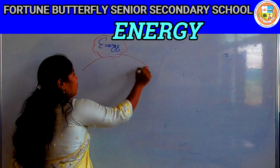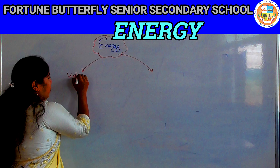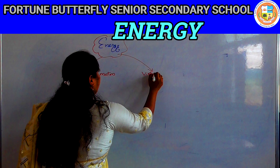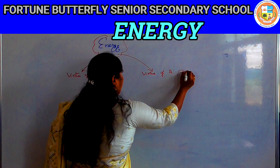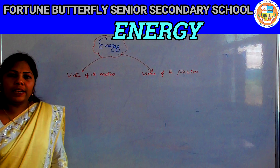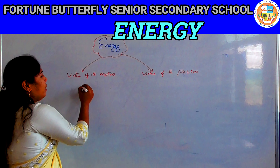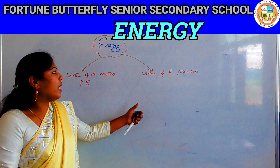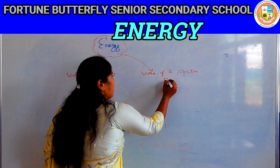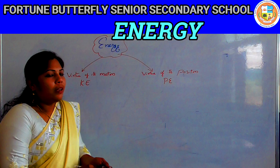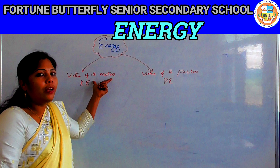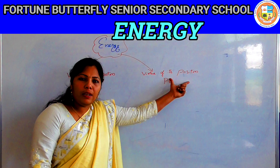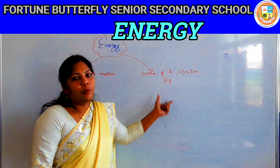Energy is divided into two types: by virtue of its motion, and by virtue of its position. When an object is moving, we say it has kinetic energy. When an object is at rest with respect to its position, it has potential energy. So energy due to motion is kinetic energy, and energy due to position is potential energy.